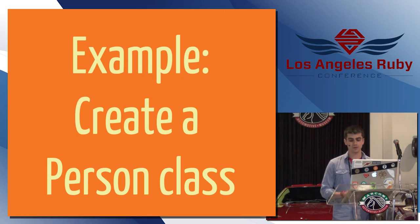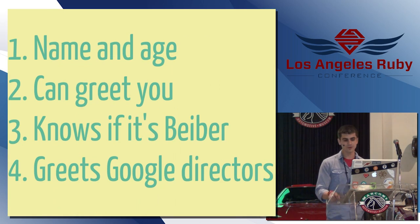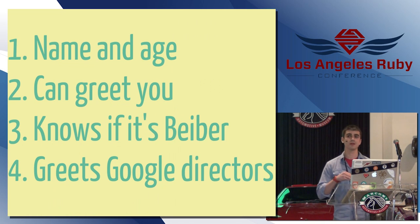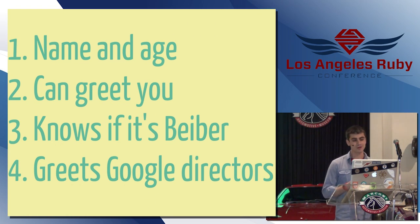So, for example, let's create a person class in both languages. These are my requirements. A person should have a name and an age. A person should be able to greet you. The person should know whether it's Justin Bieber. And the person should be able to greet some folks from the Google board of directors. So, let's look at the Ruby implementation. This is going to be very straightforward.